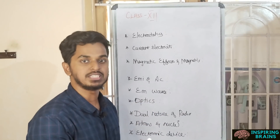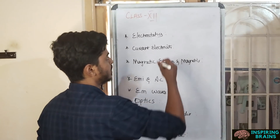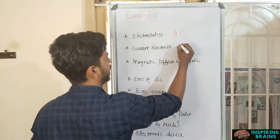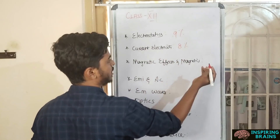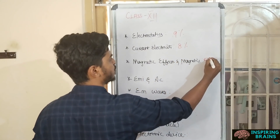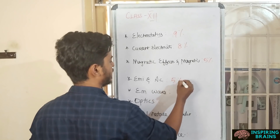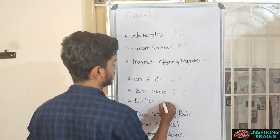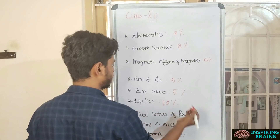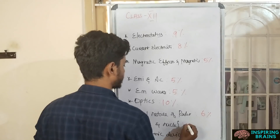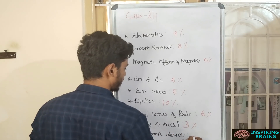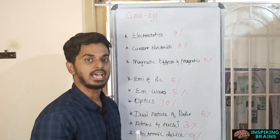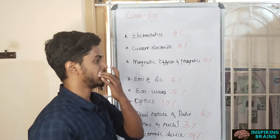Now let's see the percentage marks for each chapter. Electrostatics is 9%, Current Electricity is 8%, Magnetic Effects is 5%, AC is 5%, EM Waves is 5%, Optics is 10%, Dual Nature is 6%, Atoms and Nuclei is 3%, and Electronic Devices is 9%. These are based on analysis.